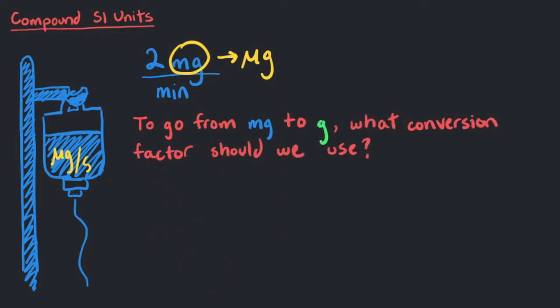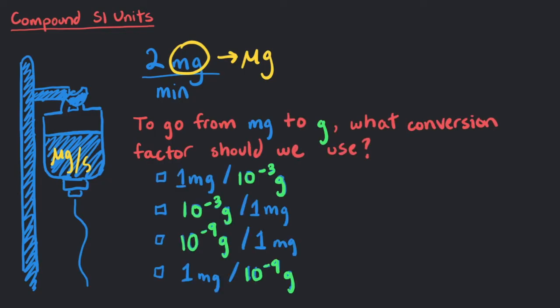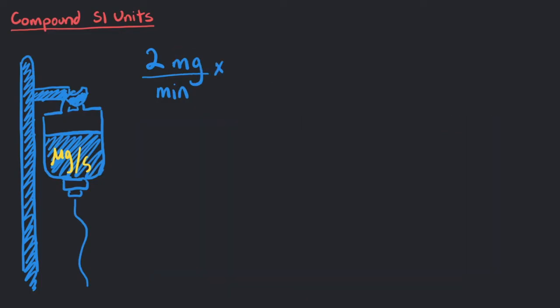That's correct! 1 mg is 10 to the negative 3 grams. So if we multiply 2 mg per minute by 10 to the negative 3 grams over 1 mg, we can cancel out the units of milligrams.